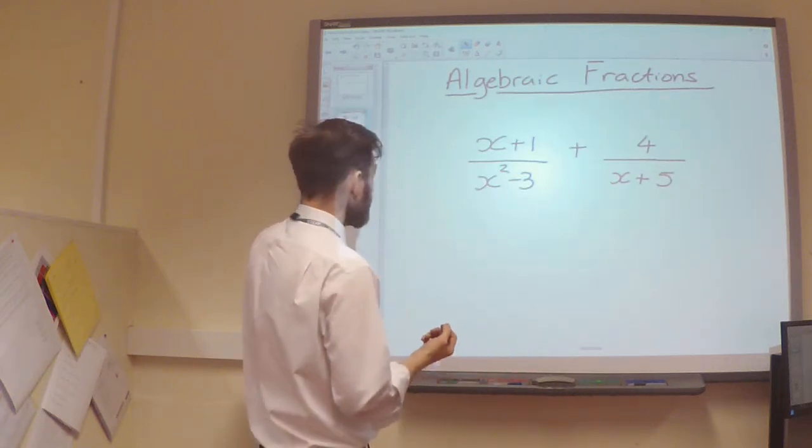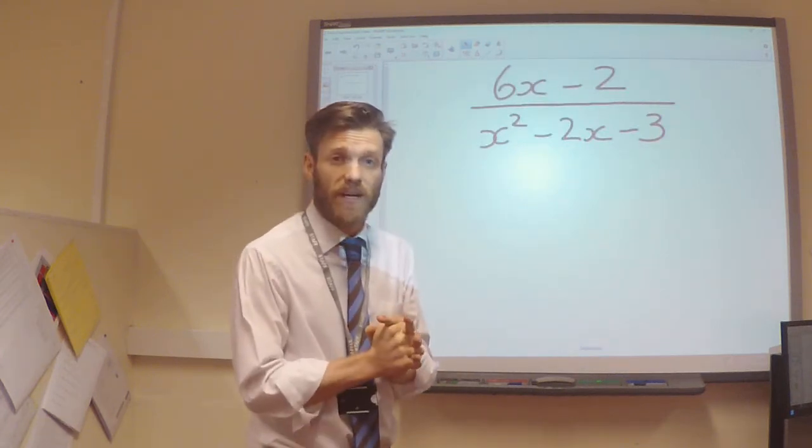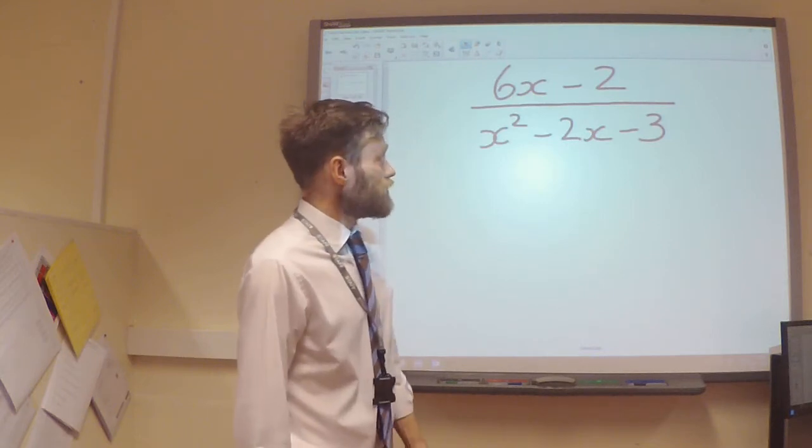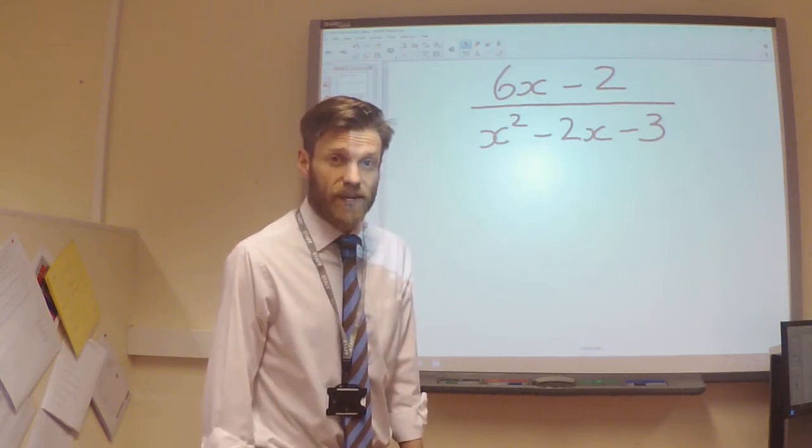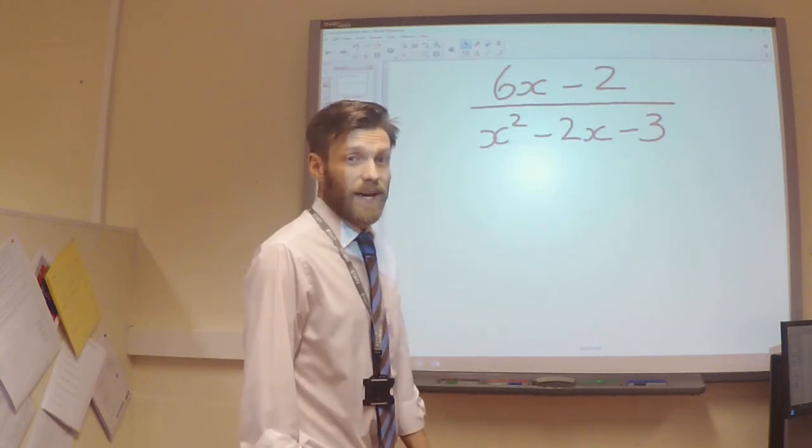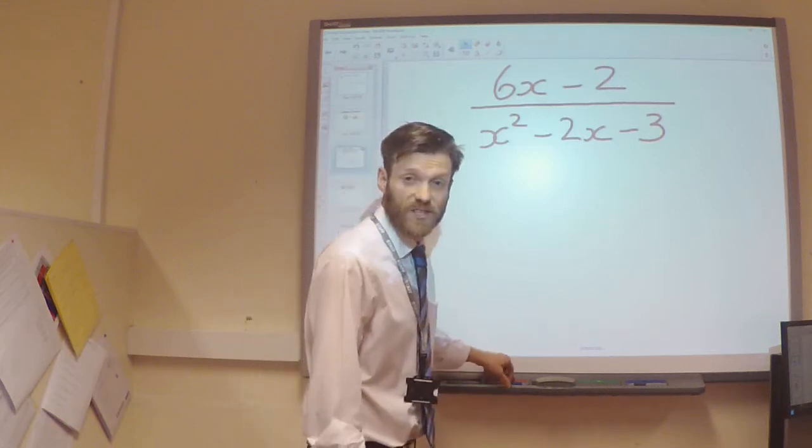We're going to look at an example such as this. So we've got 6x minus 2 as the numerator and we've got x squared minus 2x minus 3 on the denominator. My first step, I'm going to factorize the denominator so I can see what I want my two fractions to be.